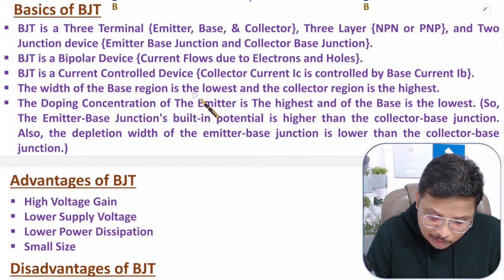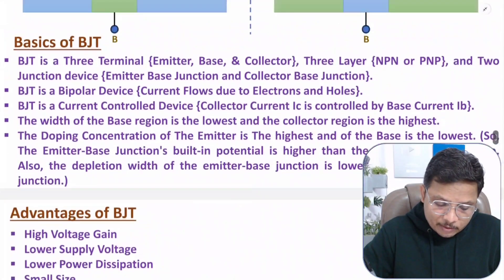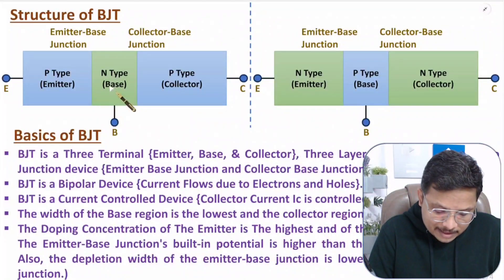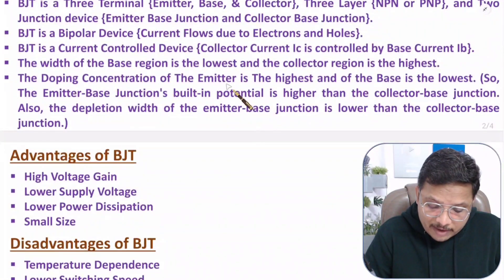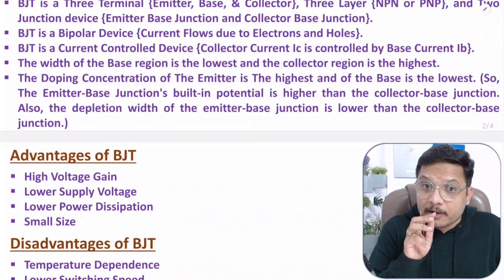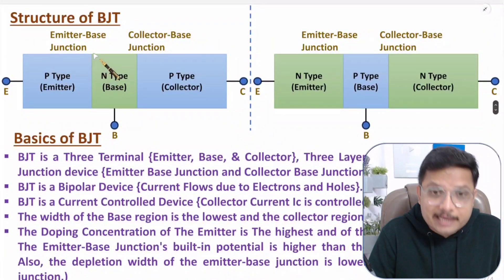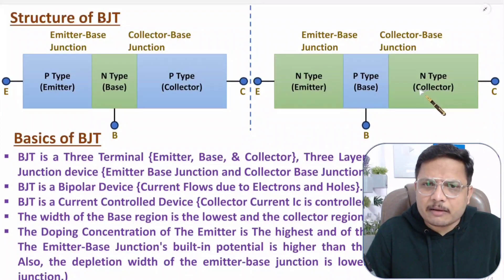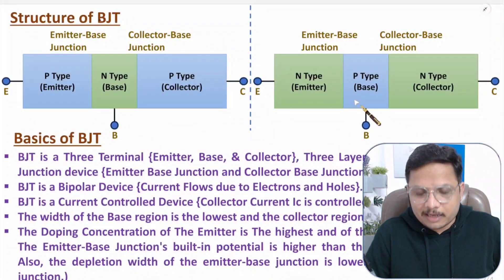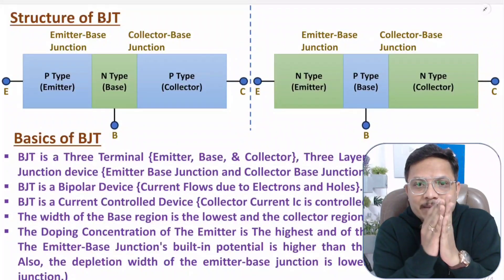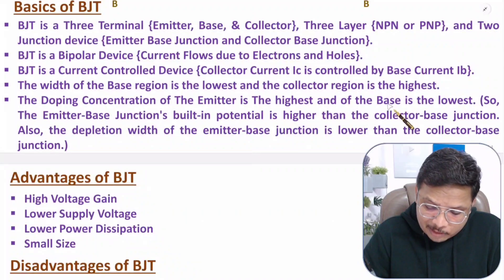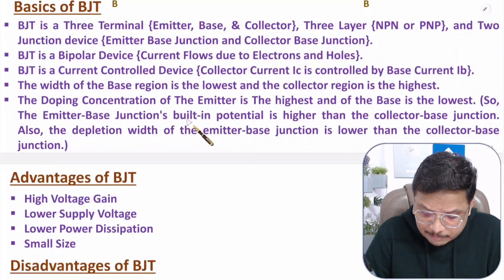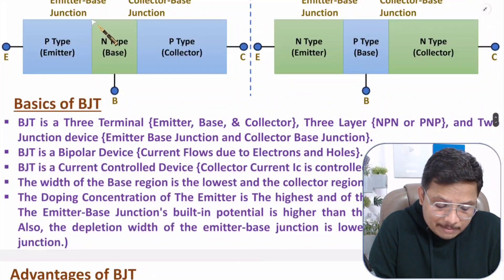The width of the base region is the narrowest and the collector region is the widest. The doping concentration of the emitter is the highest, base is the lowest, and collector is moderate. Because of these doping differences, there will be formation of depletion regions. The emitter-base junction has the highest built-in potential, since the emitter is highly doped.